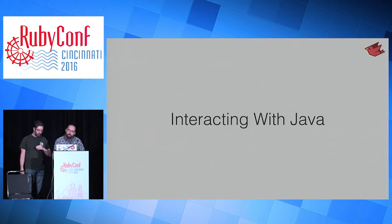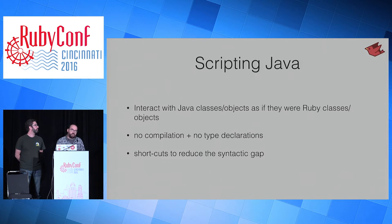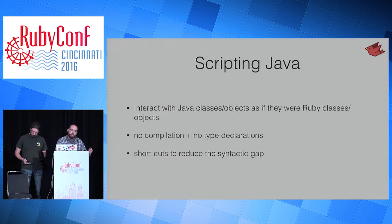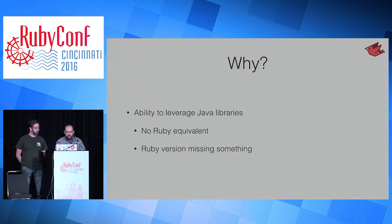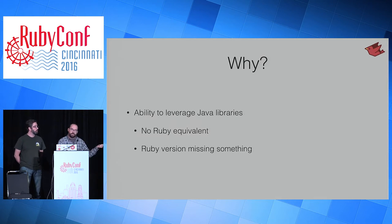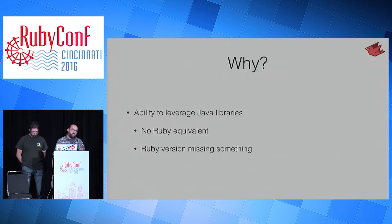A major bonus feature of JRuby is that we can interact with the Java ecosystem. The biggest feature is that we can script Java — we can take a Java class and Java objects and just pretend that they're Ruby objects. There's no compilation, no type declarations. You just pretend it's Ruby. We provide some additional shortcuts to make that disparity between Java and Ruby feel more Ruby-like. There's a whole bunch of Java libraries that don't exist in the Ruby space — like an e-commerce API that only has Java bindings. For CRuby you'd have to write a little server and make it RESTful, but with JRuby you can just call those APIs directly.